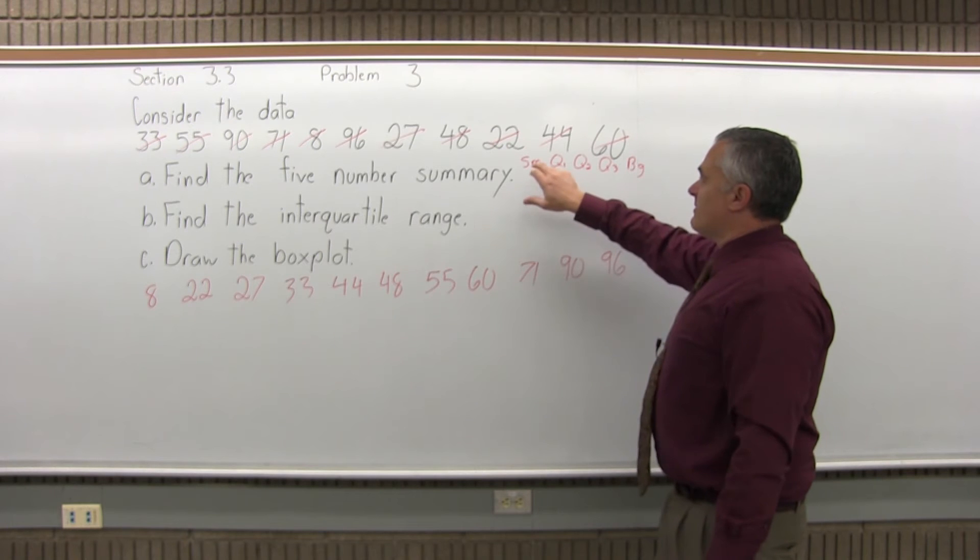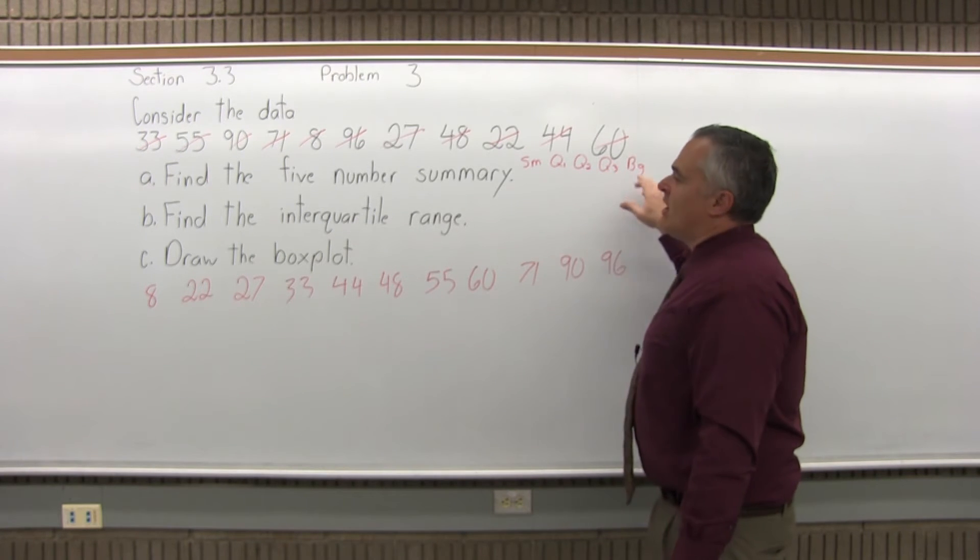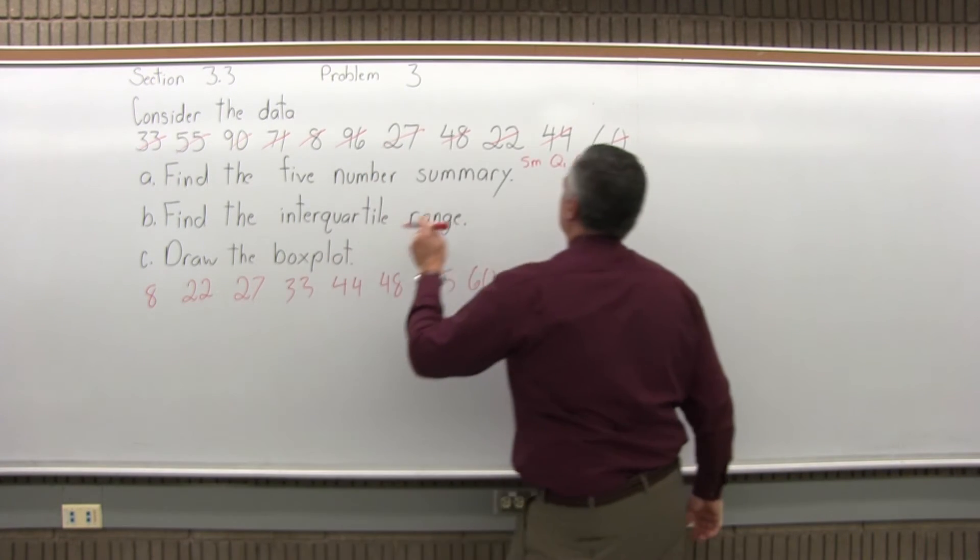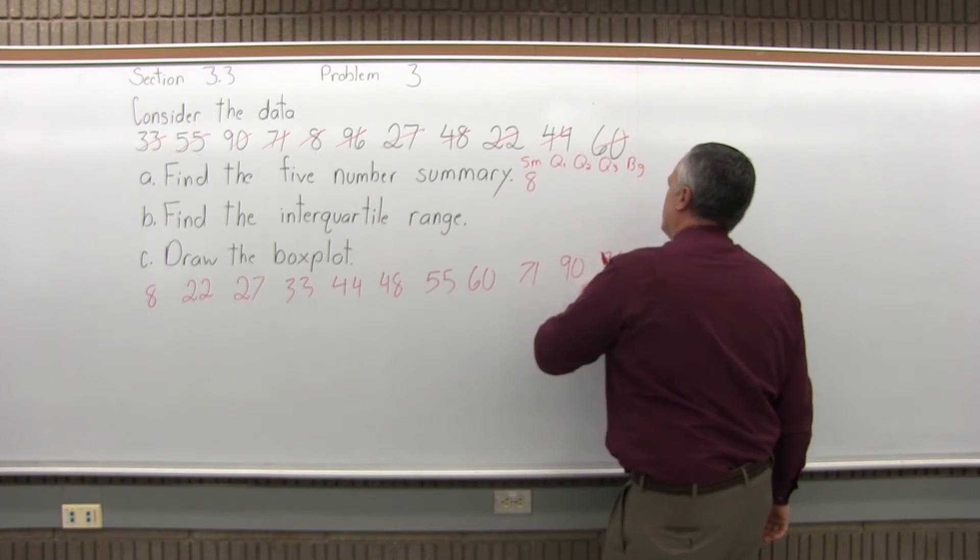So getting back to my smallest, Q1, Q2, Q3, biggest. Once it's in order, the smallest and the biggest are easy. 8 is the smallest data value. The biggest is 96.